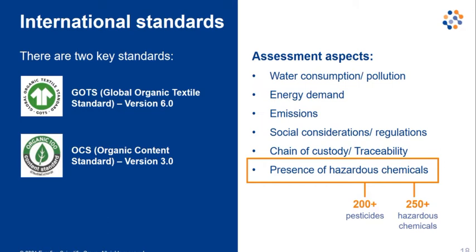Besides these certification schemes, as most of you are aware, when a product reaches any market, chemical regulations already exist in most countries that restrict or prohibit the use of hazardous chemicals. In Europe, for example, the REACH regulation or the POPs regulation are applicable. The key question is: where can these chemicals be found and how can we ensure a product does not contain hazardous chemicals?